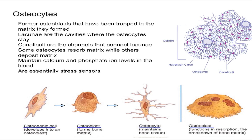Another important function of osteocytes is that they promote homeostatic maintenance of your bone density, ensuring your bone is at the right level of density. When there is stress on the bone, these osteocytes produce biochemical signals that regulate bone remodeling — in a way, they act as stress sensors.